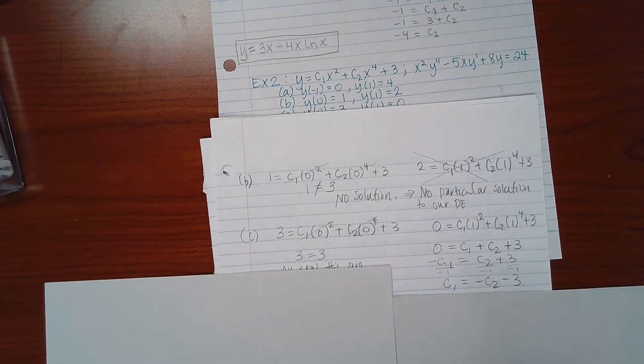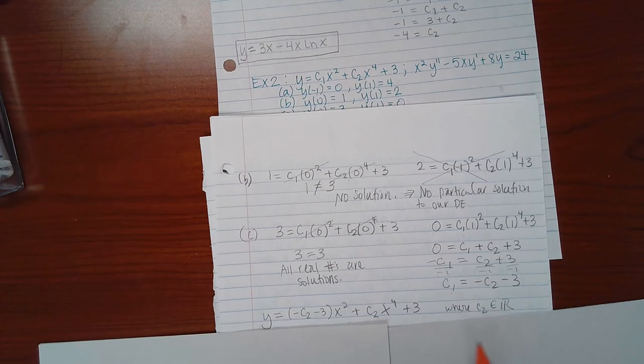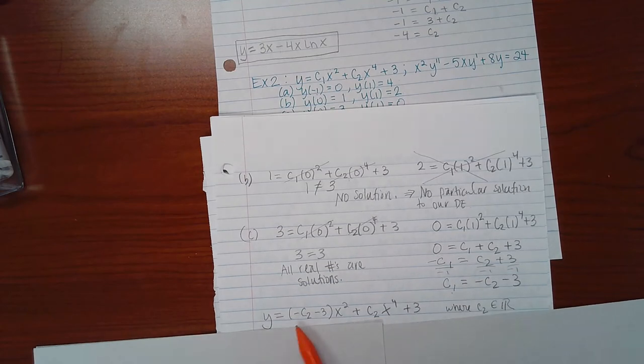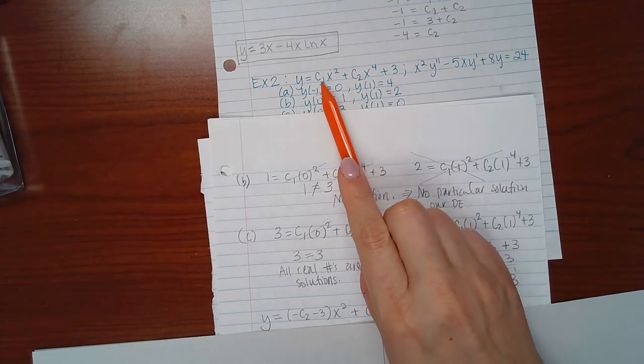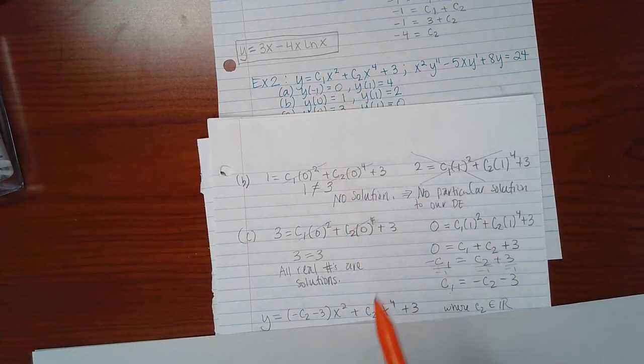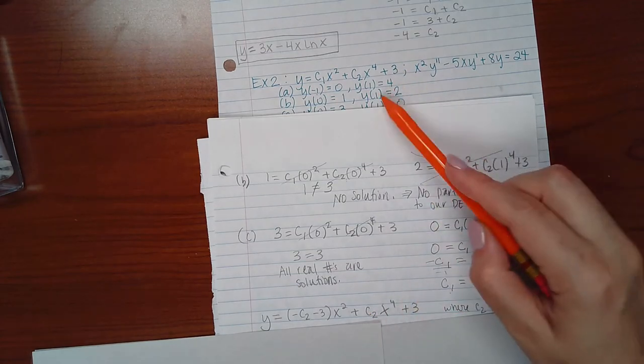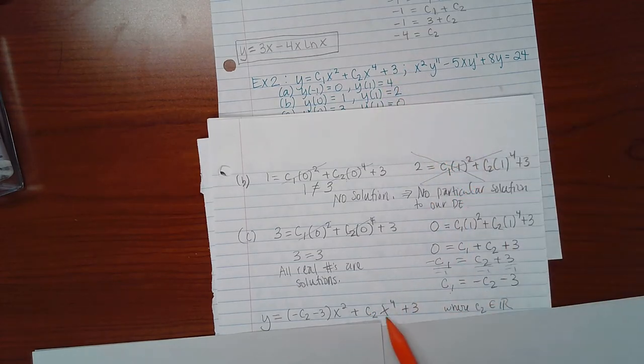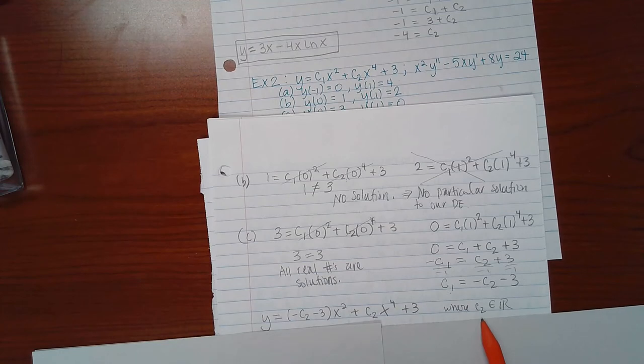I have related C1 in terms of C2. So when I go to write my function, I can write negative C2 minus 3 for C1, X squared, C1, X squared, plus C2, stay C2, X to the fourth plus 3, X to the fourth plus 3, where C2 can be any real number.